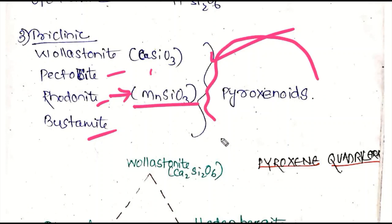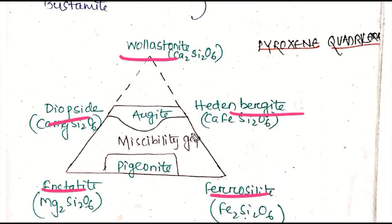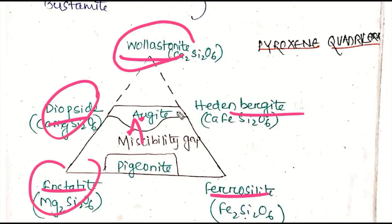MnSiO3 is a pyroxenoid, not a true pyroxene. The pyroxene quadrilateral figure includes: wollastonite, diopside, enstatite, ferrosilite, and hedenbergite. In exams you need to identify which mineral falls where in the pyroxene quadrilateral. Pyroxenoids include Ca, Mg, Fe compositions that fall outside the quadrilateral.